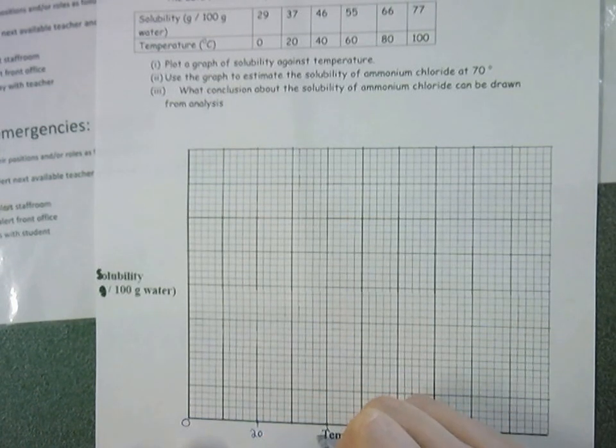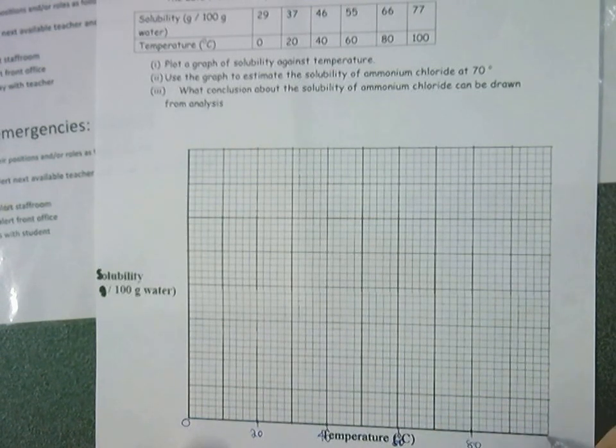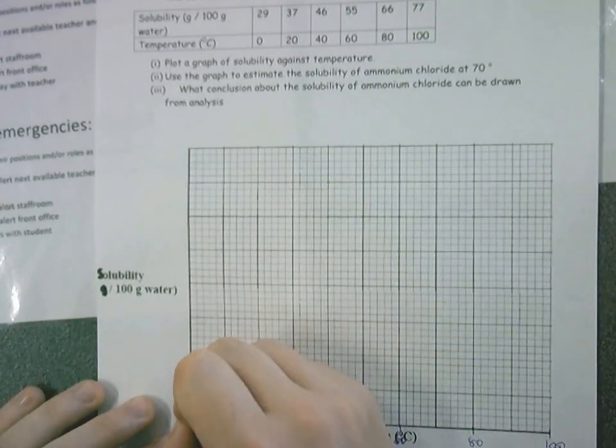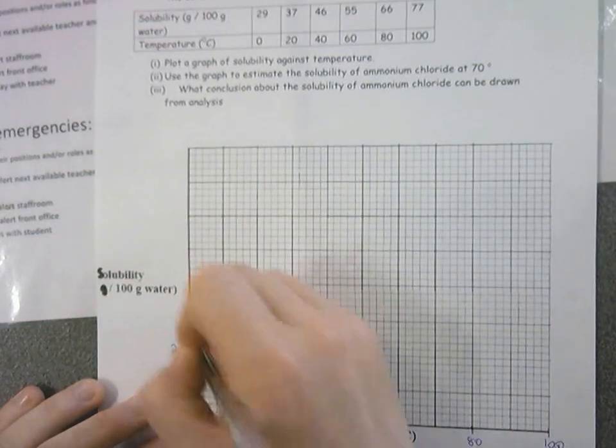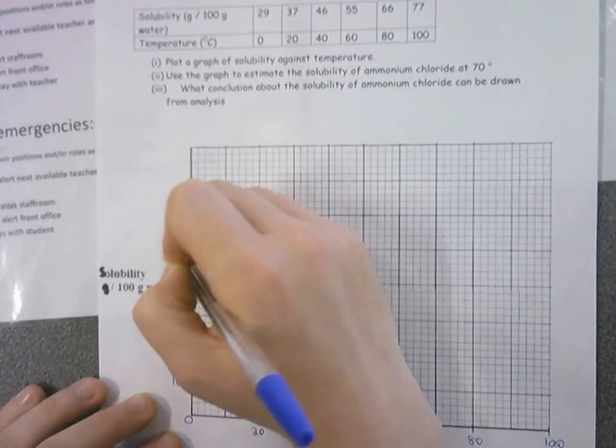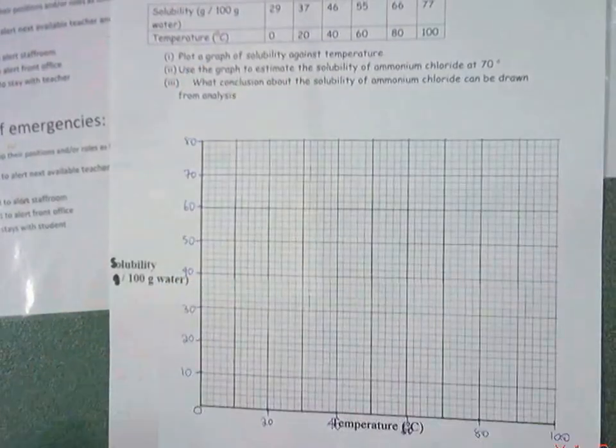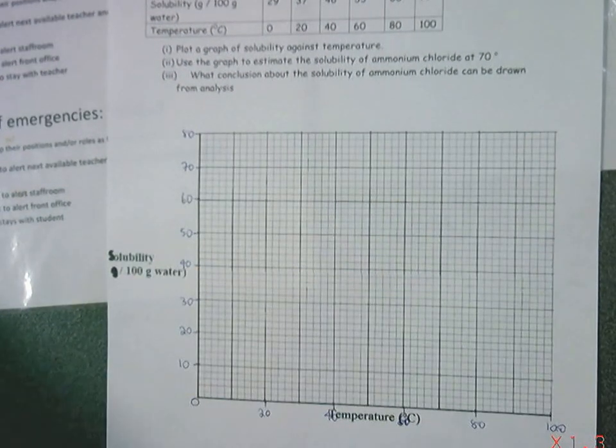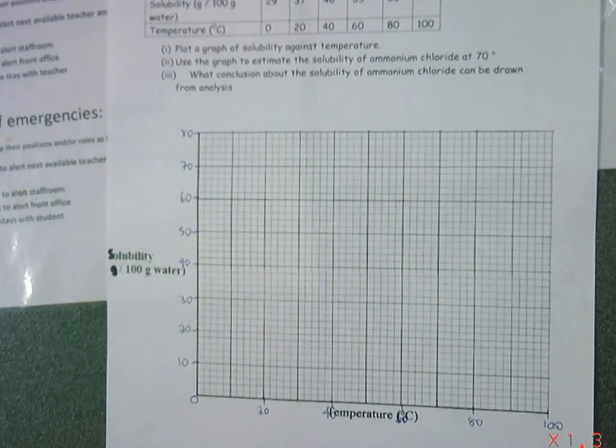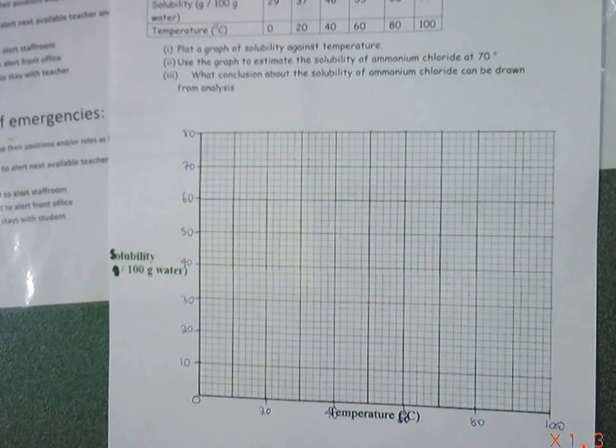The more room you can get out of it, the better, because it's going to be easier for you to plot your points. So 20, 40, 60—it's hard to see them—80 and 100 all the way down here. Going up then, as I said, we have no choice but to go in 10s. The numbers are going to be awkward. We're going to have to just make the best of what we have and try and make it as accurate as possible when we are plotting our points.